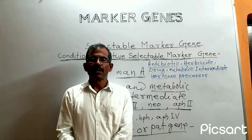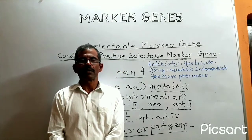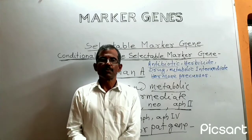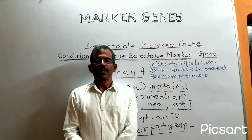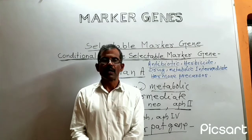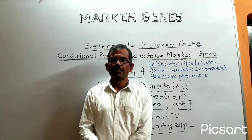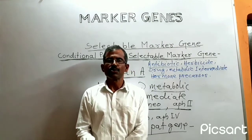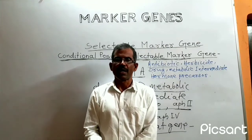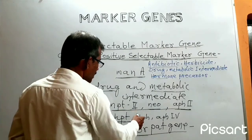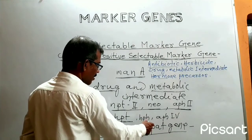One example is the mannose system, which provides access to mannose as the carbon source that can be utilized only by the transformed cells. The use of drug and metabolic intermediates to achieve selection has also been demonstrated; these can distinguish between transformed and non-transformed plants at the level of plant leaf or whole plant, but the system is not very effective during tissue culture steps necessary to generate transgenic plants. Scientific literature shows that three conditional positive selectable marker gene systems have been widely adopted for generating transgenic plants for research and commercialization.